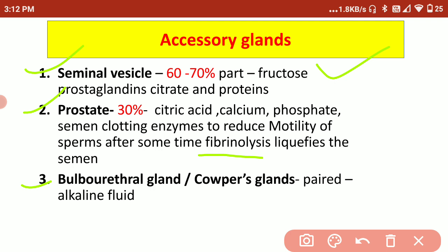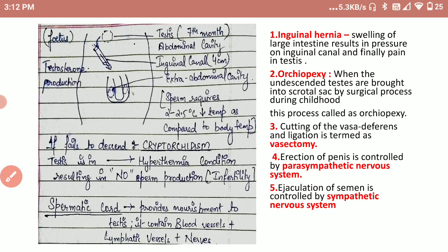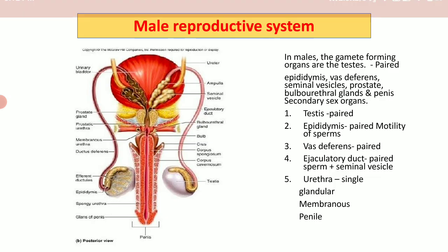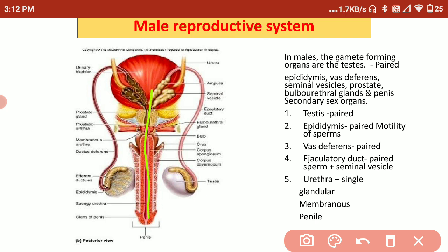The bulbourethral gland is a paired structure that secretes an alkaline fluid. This is required because the male reproductive system is urinogenital — urine, which is acidic, and sperm pass through the same pathway. Since sperms can be damaged by the acidic conditions left by urine, the bulbourethral gland provides an alkaline medium to maintain the conditions required for sperm motility. This concludes this part of the male reproductive system video.